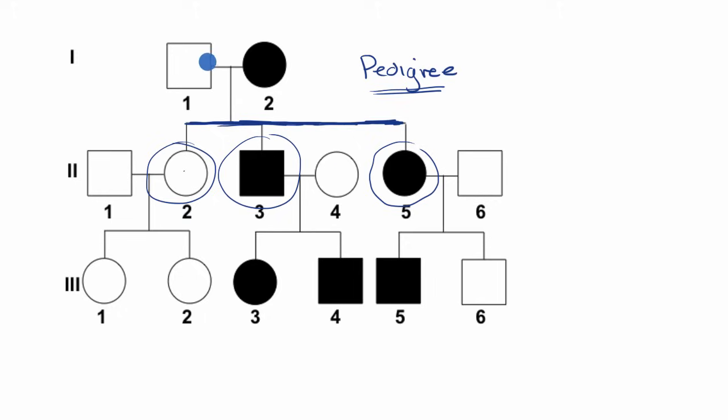Now these other people in generation two, these aren't children of the first generation. These are people, you could say, who are brought into the family. They either married into the family or you could just say they reproduced with the children.